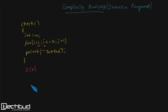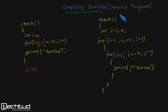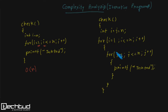Now we will take another example. In this program, in the check function, we have two for loops — one is the outer for loop and one is the inner for loop. We have to analyze the complexity of this program, so again we will check which statement will execute the highest number of times.